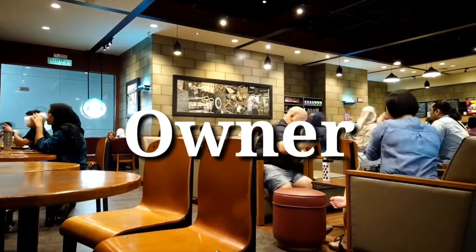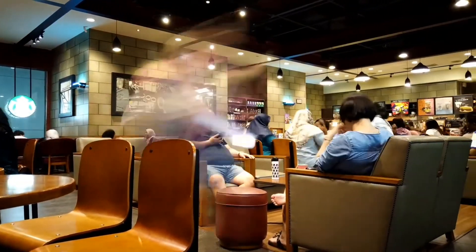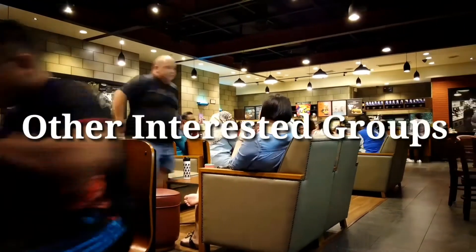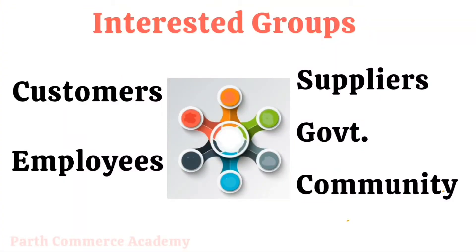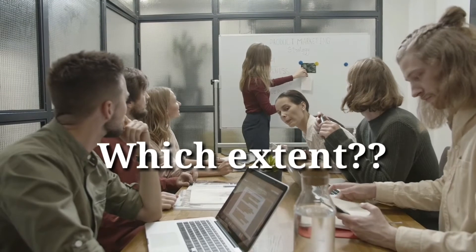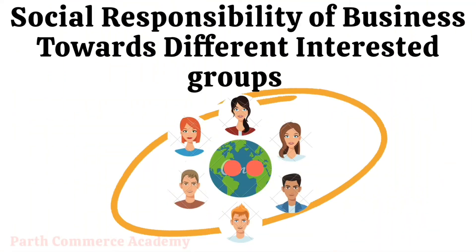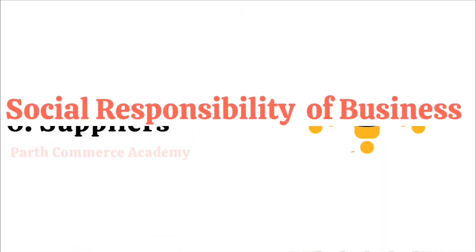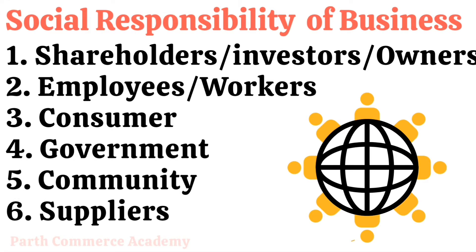Should a business enterprise run for the benefit of its owner only, or does it need to be responsible for other sections of society too — like customers, employees, suppliers, government, and the community at large? They also have to decide to what extent they want to serve various sections of society. So let's understand social responsibility towards groups like shareholders or owners or investors, employees or workers, consumers or customers, government, community, and suppliers.